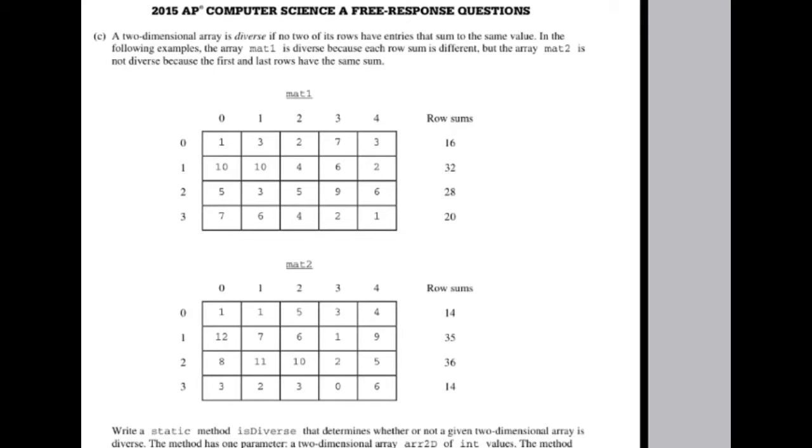All right, in this one, you say a two-dimensional array is diverse if no two of its rows have entries that sum to the same value. So if you add up all the things in the rows and then check that against every other row when you add up all the items, then if they have the same value, it is not diverse. If you have all different values, then it is diverse.